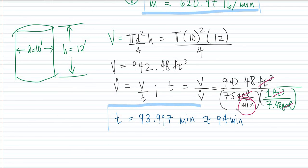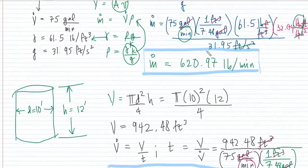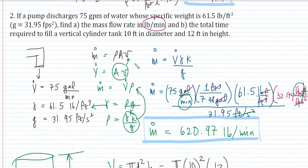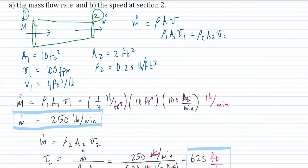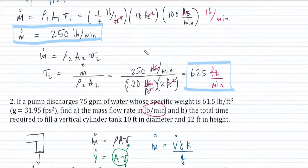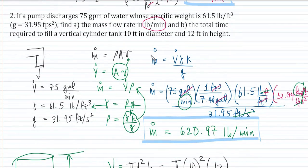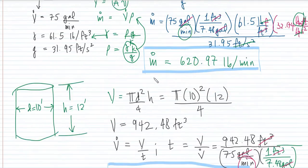Remember the formulas we have used: mass flow rate equals ρAV, and the concept that at any two points of a flow line the mass flow rate is constant, so ρ₁A₁V₁ equals ρ₂A₂V₂. We also derived that volume flow rate equals area times velocity. Thank you for watching the video.